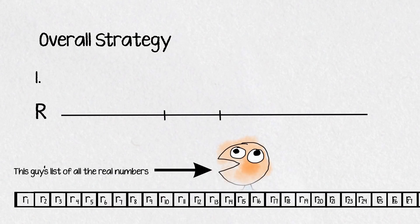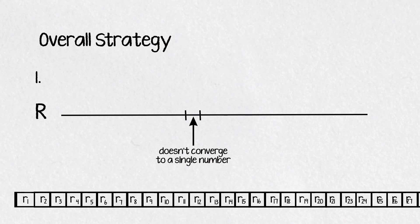Starting from an arbitrary interval on the real line, the goal will be to shrink that interval by using the real list in such a way that we can show that if the process of shrinking doesn't converge to a number then all the reals can't be on the list.